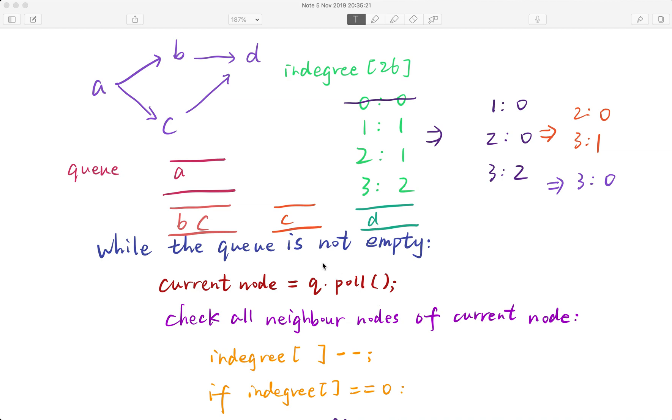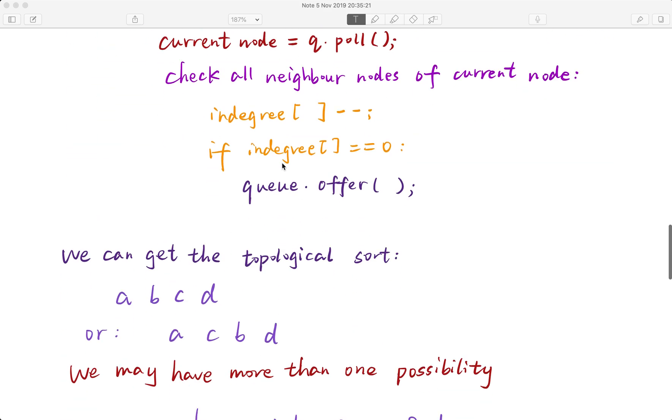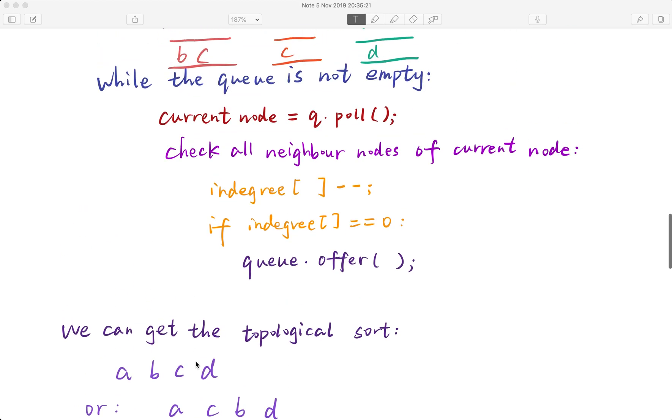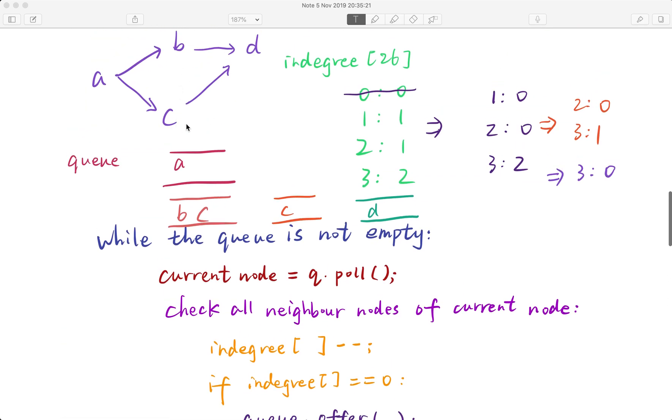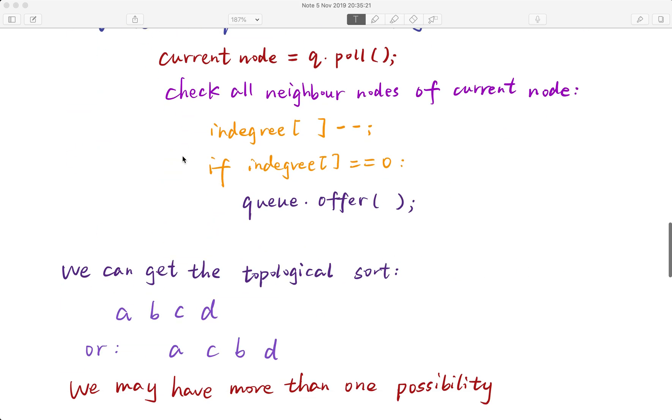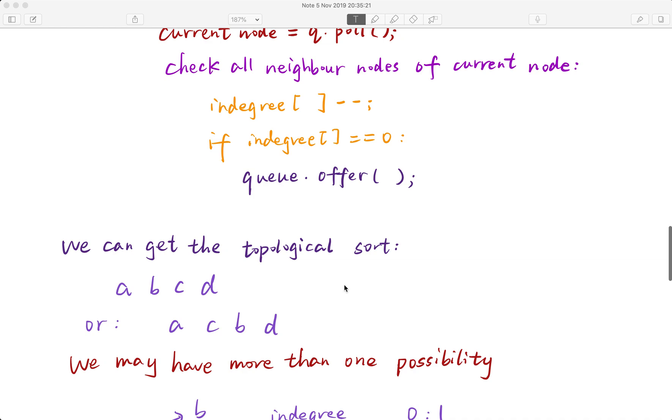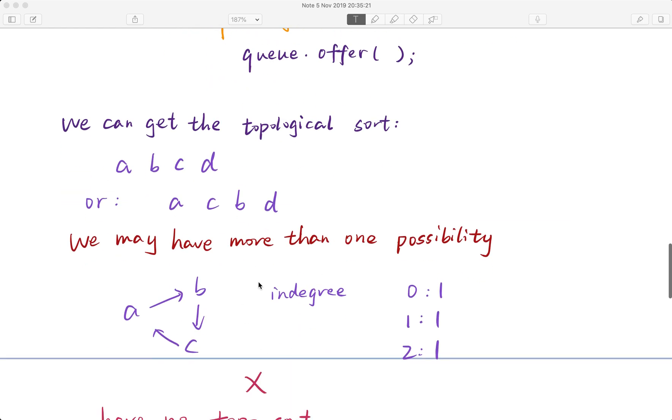In the end we can generate the order a, b, c, and d. This is the topological ordering of this given graph. But we may possibly also get a, c, b, d because b and c do not have a specific order. They are in the same level. So these are two possible topological sorting orders.